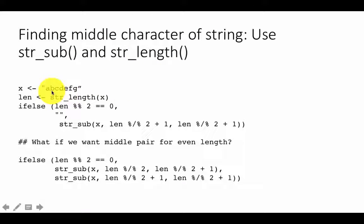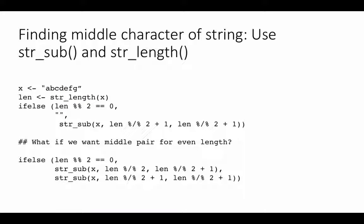Take the string A, B, C, D, E, F, G — that's a string with 7 characters. If it has 7 characters, then we know the middle character is the 4th character: 3 on each side and the one in the middle is the 4th character. So we can easily find that out.